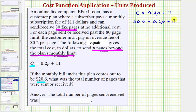To solve this two-step equation, the first step is to subtract 11 on both sides to isolate the variable term 0.2p. 20.6 minus 11 is equal to 9.6, so we have 9.6 on the left. On the right, 11 minus 11 is zero, that's why we subtracted 11 on both sides. So we have 9.6 equals 0.2p.